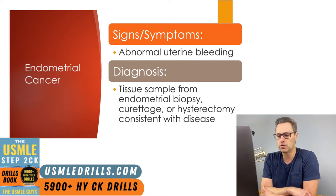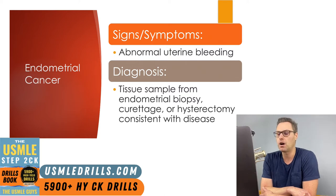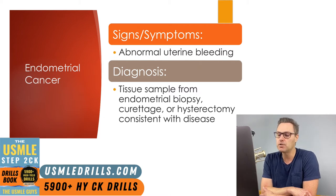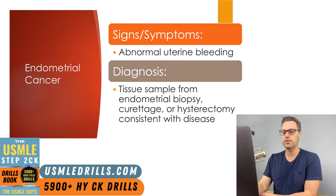Patients with endometrial cancer will sometimes be identified using cervical cytology during cervical cancer screening, including atypical glandular cells among other histologies. Patients will not usually have an abnormally large or painful uterus on exam, and lab abnormalities are not usually present unless the bleeding is so severe that it causes anemia. Diagnosis is made with tissue samples from either endometrial biopsy or curettage, or if the patient was having a hysterectomy and is found to have histology consistent with the disease.